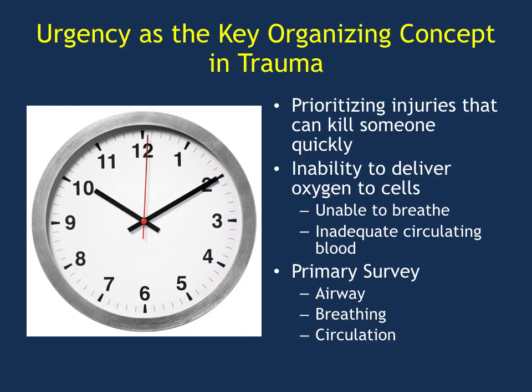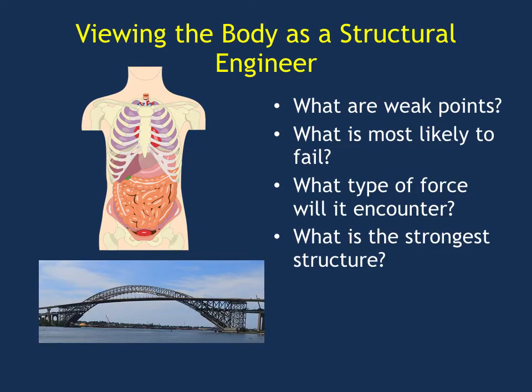Oftentimes the thing that will actually kill the patient first is losing their airway or having respiratory compromise before circulatory shock will kill them, which we'll get into in a future lecture about how trauma surgeons prioritize the ABCs of trauma. People get into shock, they lose their consciousness because they don't get enough blood to their brain and then they lose their airway.